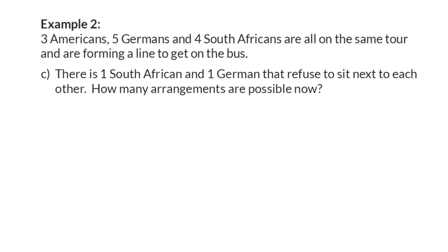Question C: There's one South African and one German that refuse to sit next to each other. How many arrangements are possible now? Sometimes it helps if you rather do the opposite calculation.